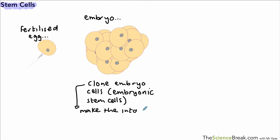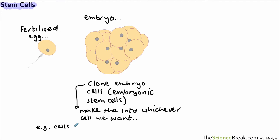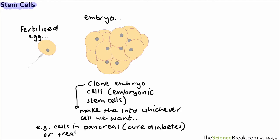These cells are called embryonic stem cells - they are undifferentiated and they come from an embryo. We can make them into whichever cell we might want, and this is where they might be useful in medical treatment. For example, in diabetes the body can't make insulin, so if we made embryonic stem cells into new pancreas cells we could cure diabetes. Another example is paralysis, where damage to nerve tissue could be treated by making new nerve tissue.